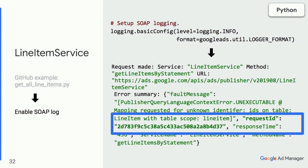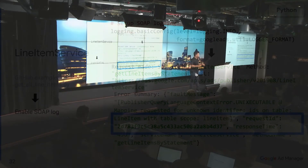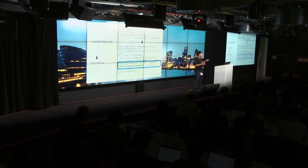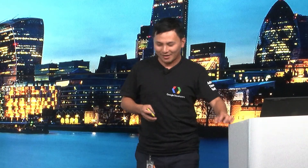This is my second tip of the day: please always include the request ID in your communications with our support team. It allows us to look up your specific API request among the 20 million API requests — as Alex showed you — in our service logs, and speed up the diagnostics.